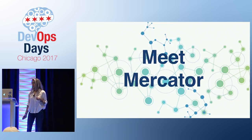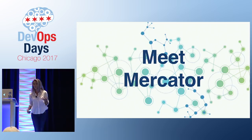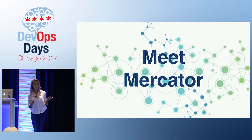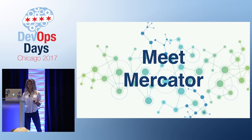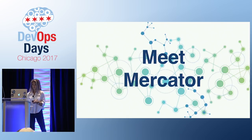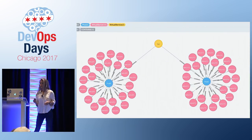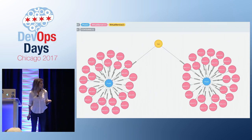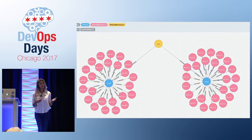Three years ago, we were struggling with manual deployments. We were keeping track of our services via Excel spreadsheet. We needed greater visibility into our infrastructure, and we really wanted a way to get real-time or near real-time state of our infrastructure. So we created Mercator. This right here is a visualization of our graph database. Mercator is a Java application, and it's storing information into a graph database — we use Neo4j.